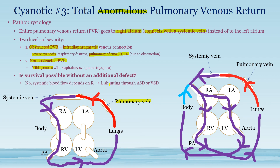Blood flow depends on right-to-left shunting through an ASD or VSD because all the blood is going through the pulmonary vein to the systemic vein and back to the right atrium. The only way for it to reach the other side of the heart is through a defect, such as a right-to-left atrial septal defect, or through a patent ductus arteriosus connecting the pulmonary artery and the aorta, allowing mixing of blood so that some hypo-oxygenated blood reaches circulation.